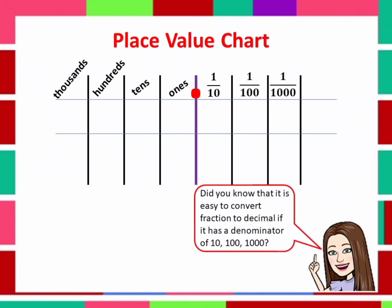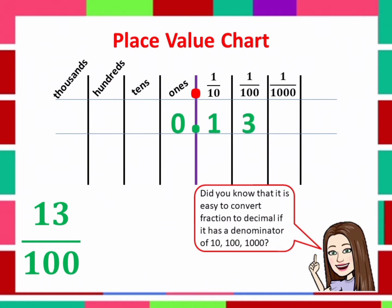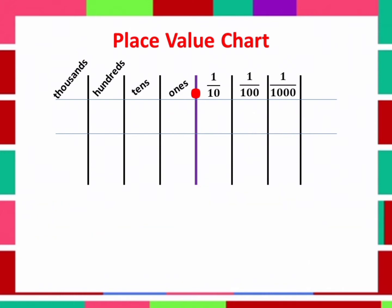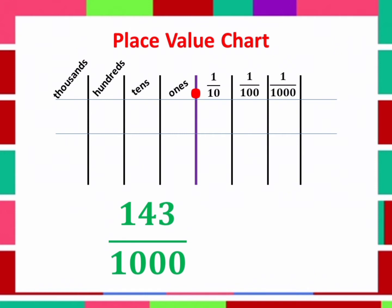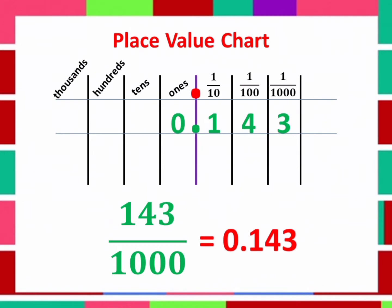Next is 13 over 100. 13 over 100 is found in the place value chart like this. Therefore, 143 over 1000 is equal to 0.143.